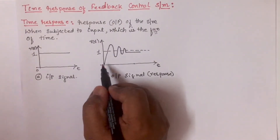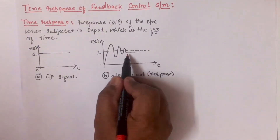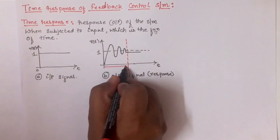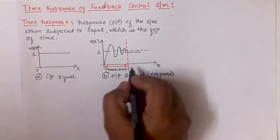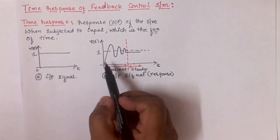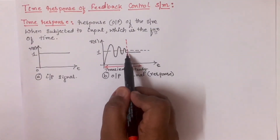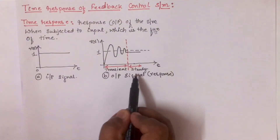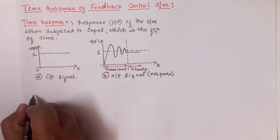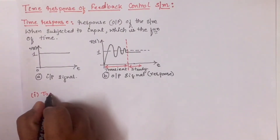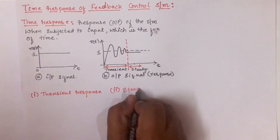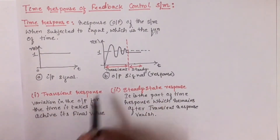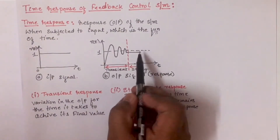If we observe the output, initially there is a variation in the output and then the output is steady. Hence we can divide the output into two parts. The first part is known as transient state and the second part is known as steady state. So in transient state, the output will be having variation before the output is steady. The region where the output is steady is known as steady state. Hence we can divide the time response into two parts: the first one is transient response and the second part is steady state response.